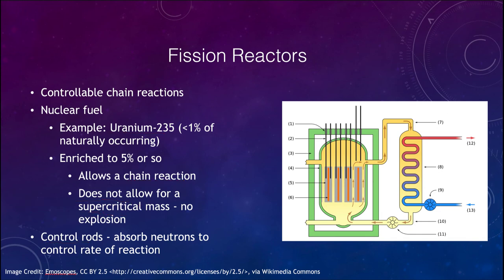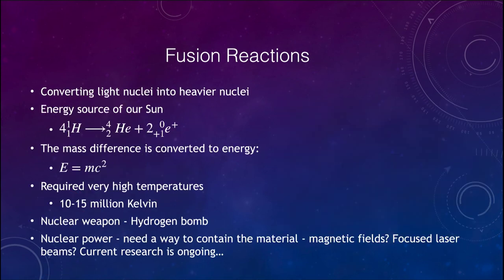Now the other type of nuclear reactions are fusion reactions. Fusion reactions occur when you convert light nuclei into heavier nuclei. This is what our sun does. So our sun takes four hydrogen atoms to create one helium atom and two electrons. Make sure that the masses and the charges balance on both sides. And don't forget that there are coefficients in front, but you should look and see that that should balance correctly. There's a difference in mass between these which is converted to energy by E equals MC squared. That small amount of mass is converted into a large amount of energy.